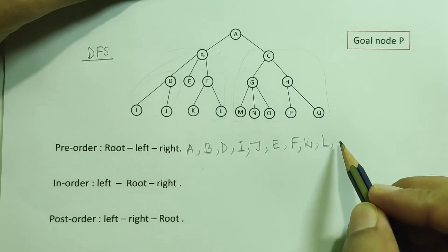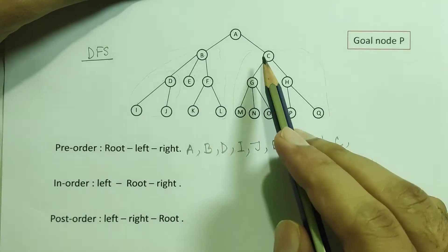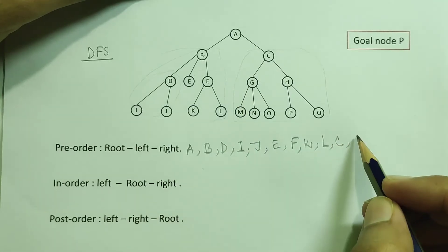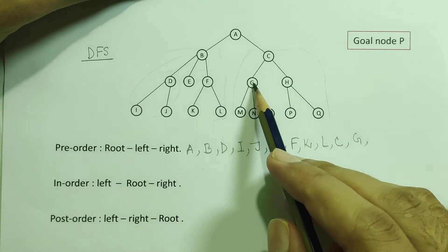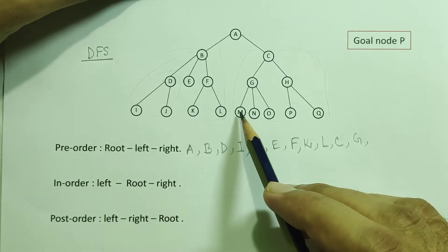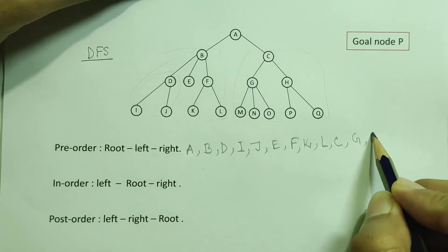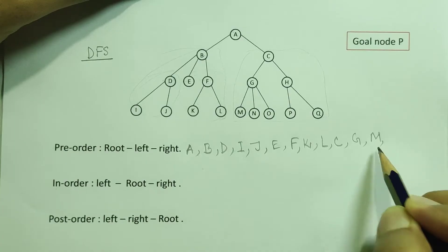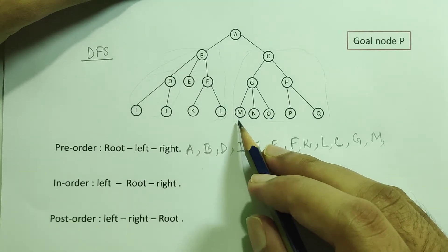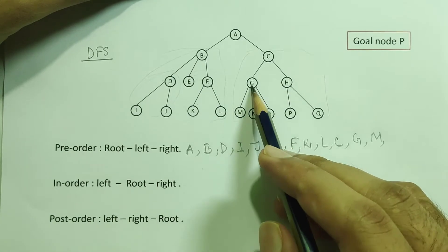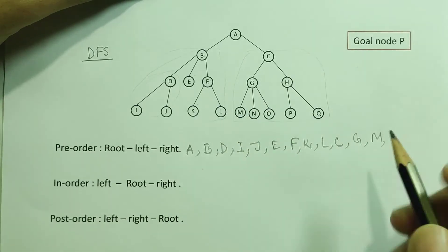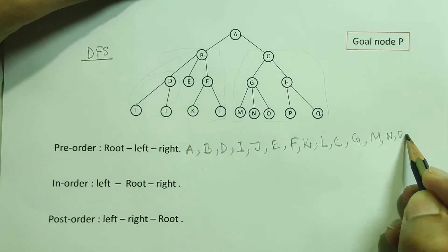C is the root node. C is L, C is G. G is the left node. G is the left node, M is M. In the last node, the child node is null. In the root node, we can find the right node. Q is N, R, O. So we can find N, R, O.